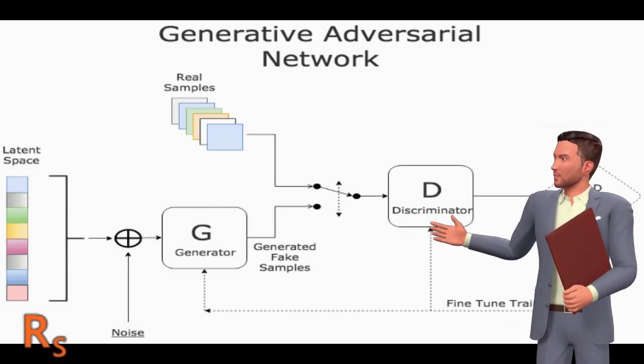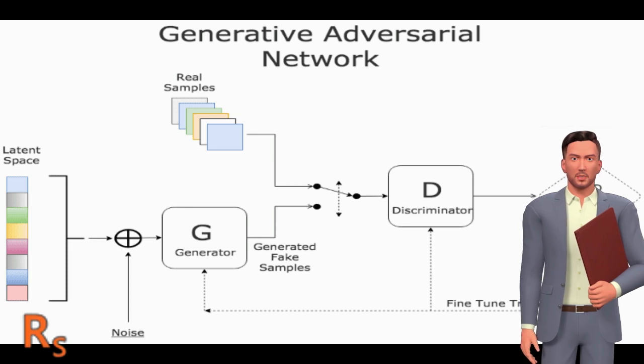GAN stands for generative adversarial network, where two neural networks compete with each other.